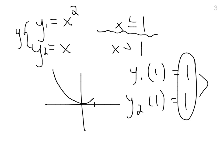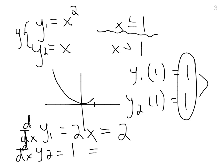The question as to whether or not it's differentiable has to be answered by determining if the derivatives are the same. So what is the derivative of y1? Well, that's equal to 2x. 2x at 1 is equal to 2. However, the derivative of y2 is equal to 1, which at the point 1 is equal to 1, so the derivatives are not equal.